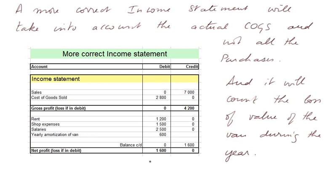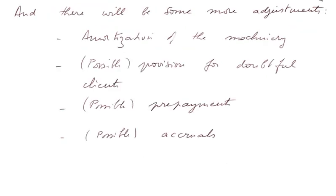So the better calculation of the profit or loss gives a loss of 1,600. And there will be more adjustments. We will amortize the machinery as well, and we may have to pass a provision for doubtful clients. We may also have to remove some prepayments that do not concern the accounting cycle, and conversely, take into account charges or consumptions for which we have not yet received an invoice and which therefore do not appear in the trial balance.